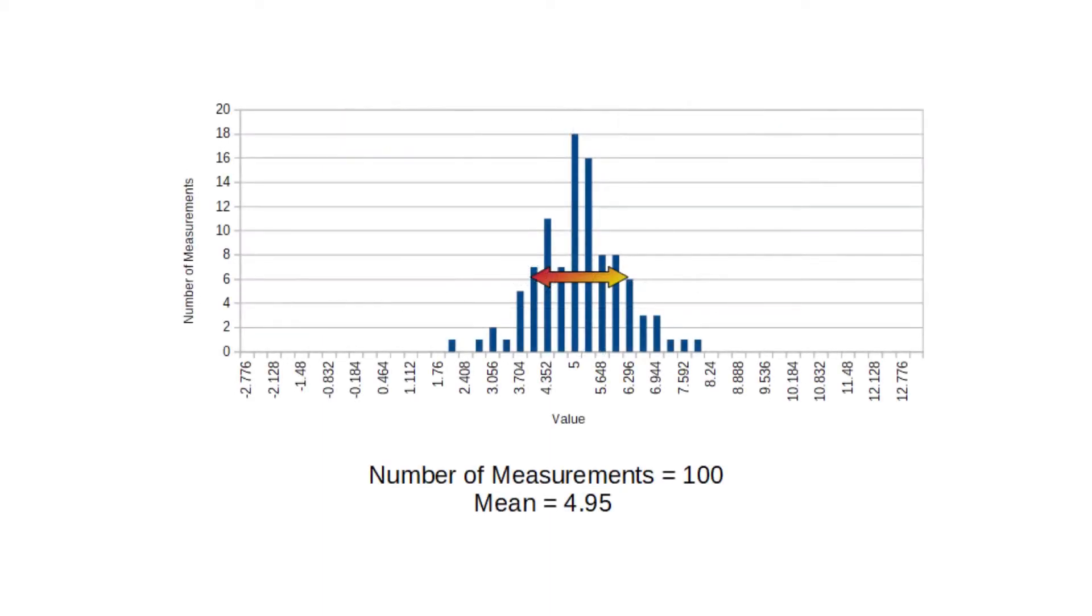The width of the bell curve shows how tightly packed our values are. When we estimate the uncertainty in a single measurement, we're really guessing at what we think the width of this bell curve would be if we did the measurement many, many times.